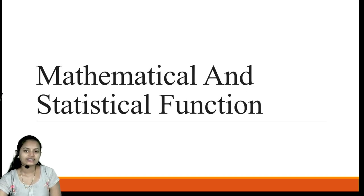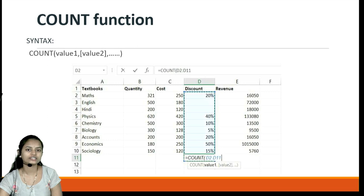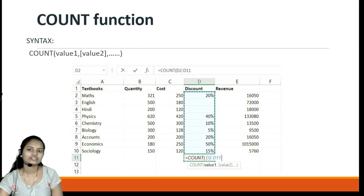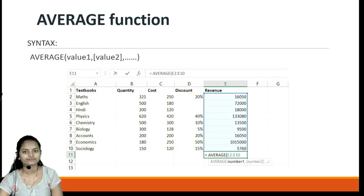Next we will see the mathematical and statistical functions used in Excel. The first is the COUNT function, which counts the number of values in a particular column or range. In the given example, the COUNT function is used on column D. The syntax is COUNT followed by value1, value2, and so on, or we can select a range, and it will count the number of items in that range.